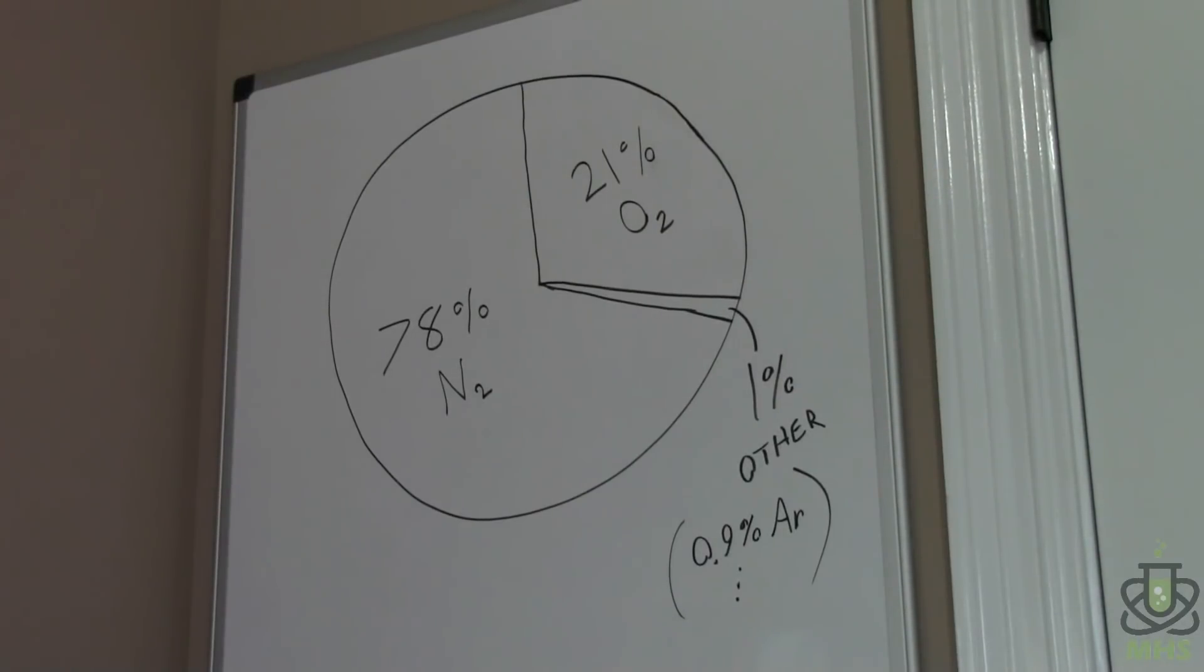And of that 1% it's actually mostly argon, 0.93% and the remainder being trace gases like carbon dioxide, krypton, neon, things like that. So if we can separate out that oxygen we can end up with very pure nitrogen for use in inert atmosphere work or as a feedstock to like a liquid nitrogen system for example.